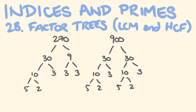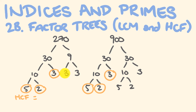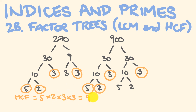We can now work out our highest common factor and lowest common multiple. For the highest common factor, we look for numbers in common. We have 5 and 5, a 2 and a 2, a 3 and a 3, and a 3 and a 3 — so we go 5 times 2 times 3 times 3. 5 times 2 is 10, times 3 is 30, times 3 gives us 90. For the lowest common multiple, we take this 90 and multiply by what's left: times 3 times 5 times 2.